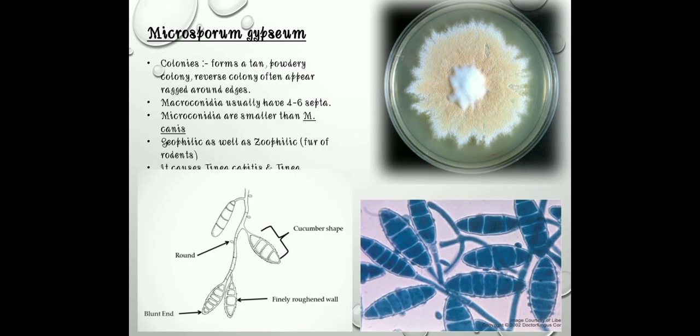The next species is Microsporum gypseum. Colonies form a tan, powdery colony; reverse colonies often appear fringed around edges. Macroconidia usually have four to six cells, whereas microconidia are smaller than M. canis. It is geophilic as well as zoophilic, and mainly present in fur of rodents. It causes tinea capitis and tinea manuum. As you can see in this picture, the macroconidia are cucumber-shaped whereas the microconidia are pear-shaped.